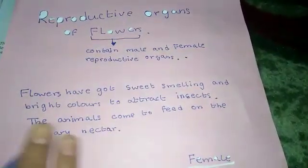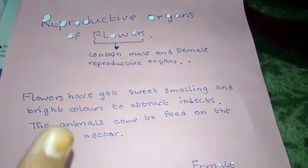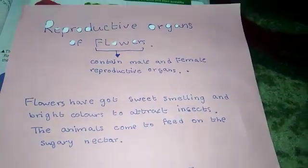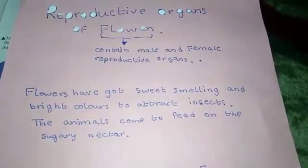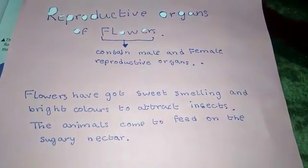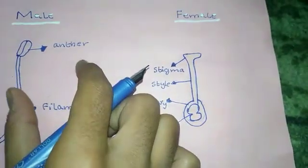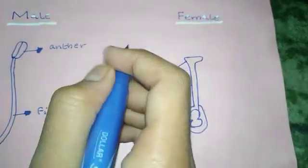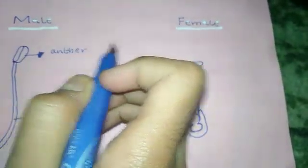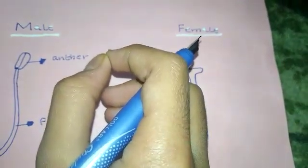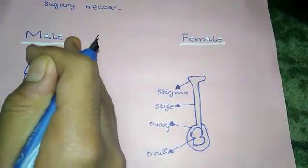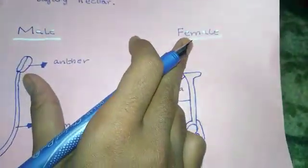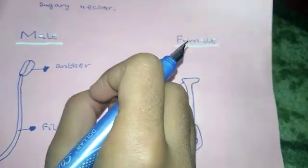Flowers contain male and female reproductive organs. The plants which contain both the male and female reproductive parts are called perfect flowers. Some flowers contain only male or only female parts, but those with both are called perfect flowers.